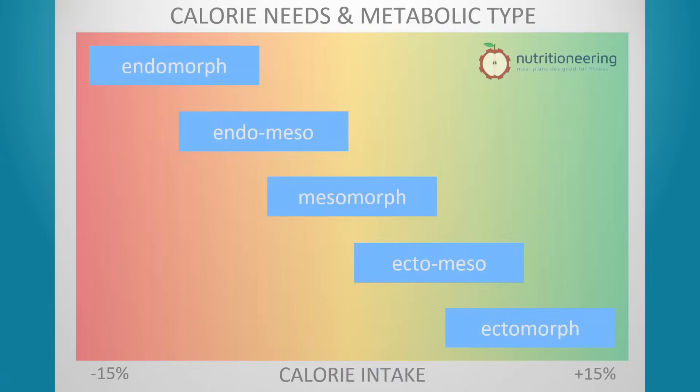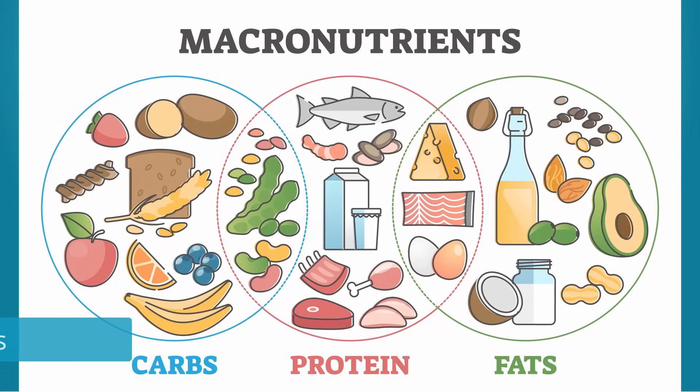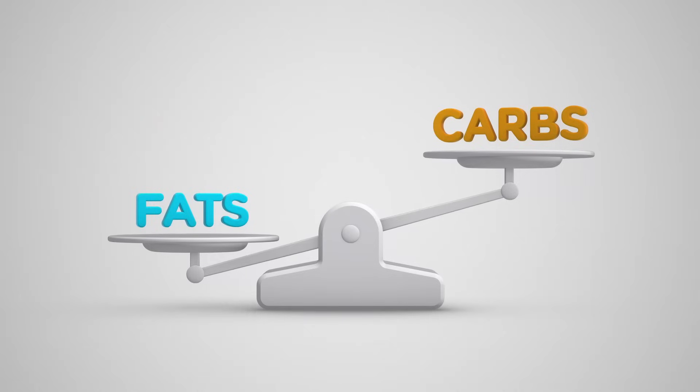Endomorphs need fewer calories than the average person, while ectomorphs need more. Mesomorphs and meso blends fall somewhere in between. The next factor to consider is macronutrients, which are protein, carbs, and fat.